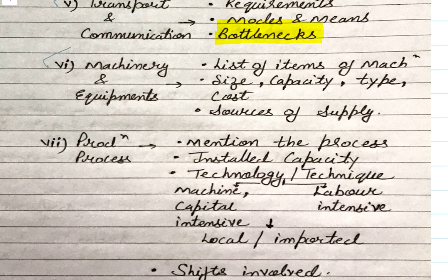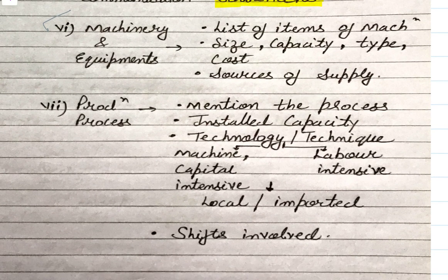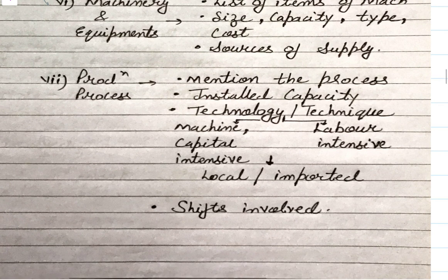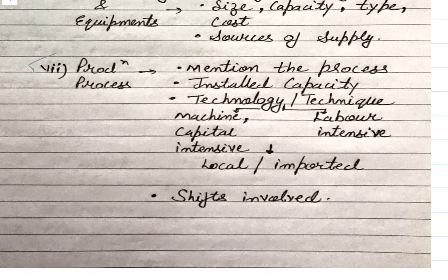Next is machinery and equipment. Under this, you will describe what type of machinery is needed, the list of items of machinery and equipment, any accessories required, the size and capacity of your machinery, the sanctioned and licensed capacity — for example, how many units the machine can produce in all machine hours it operates — what type is needed, what the cost will be, and the supplier. After machinery, give a basic idea of the production process — mention installed capacity, technology and technique of production, whether you are capital intensive or labor intensive, whether technology required is local or imported, and what shifts are involved: day shift, night shift, or both.